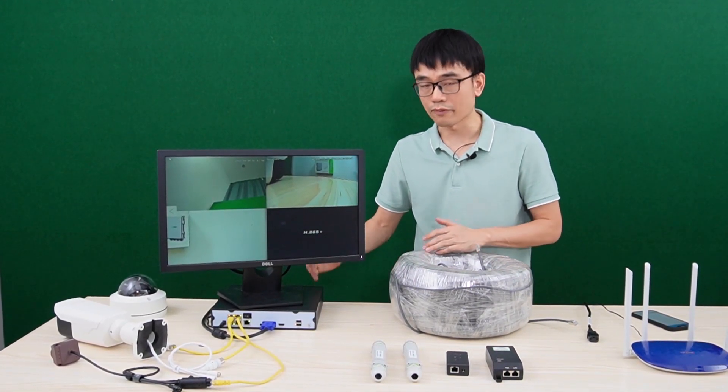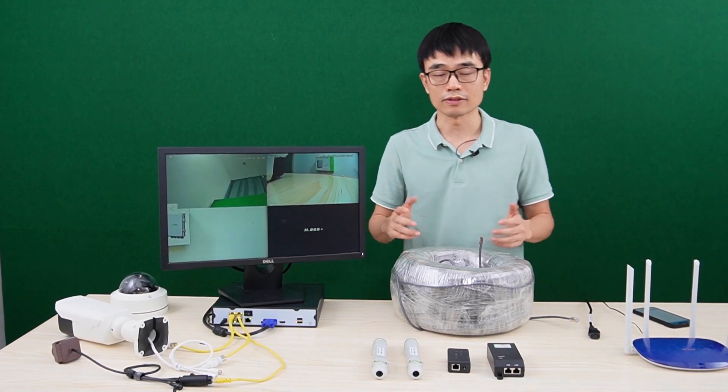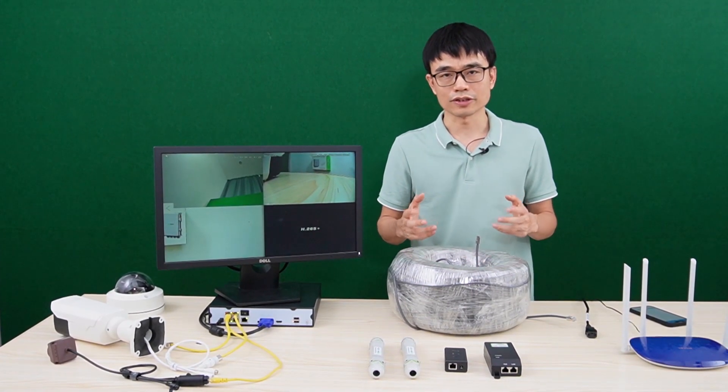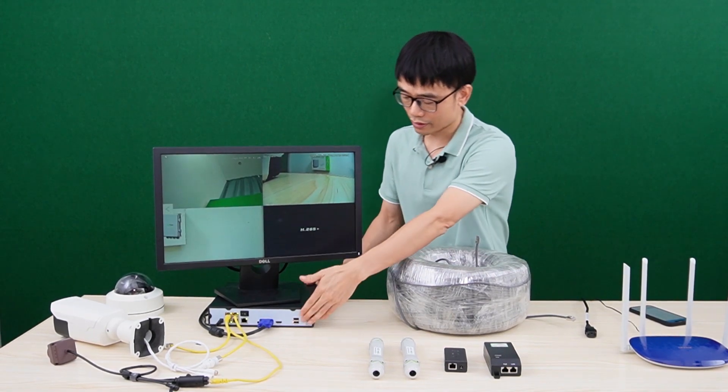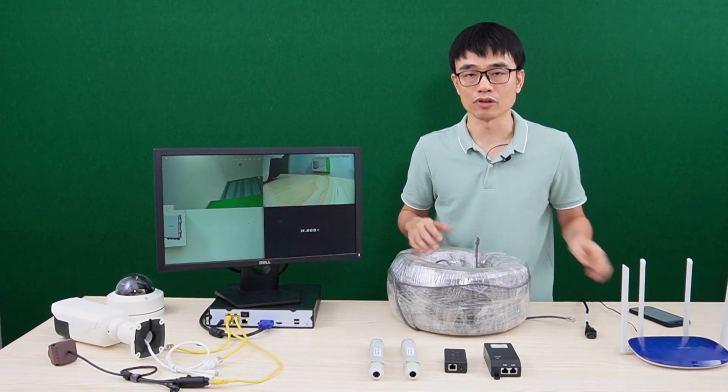The distance between the network video recorder and the router is about 1000 feet. We cannot just use the Cat5e or Cat6 Ethernet cable to connect this NVR directly to the router, it will not work.